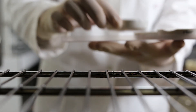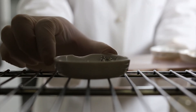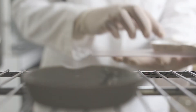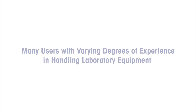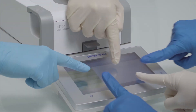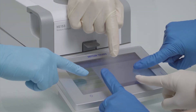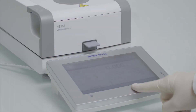In most cases, the reference method for moisture content determination is the drying oven. With this method, a measurement takes several hours, compared to only a few minutes with the moisture analyzer. With the help of the method wizard function and the method collection for pharma excipients, you can validate the moisture analyzer as an alternative method for moisture content determination.